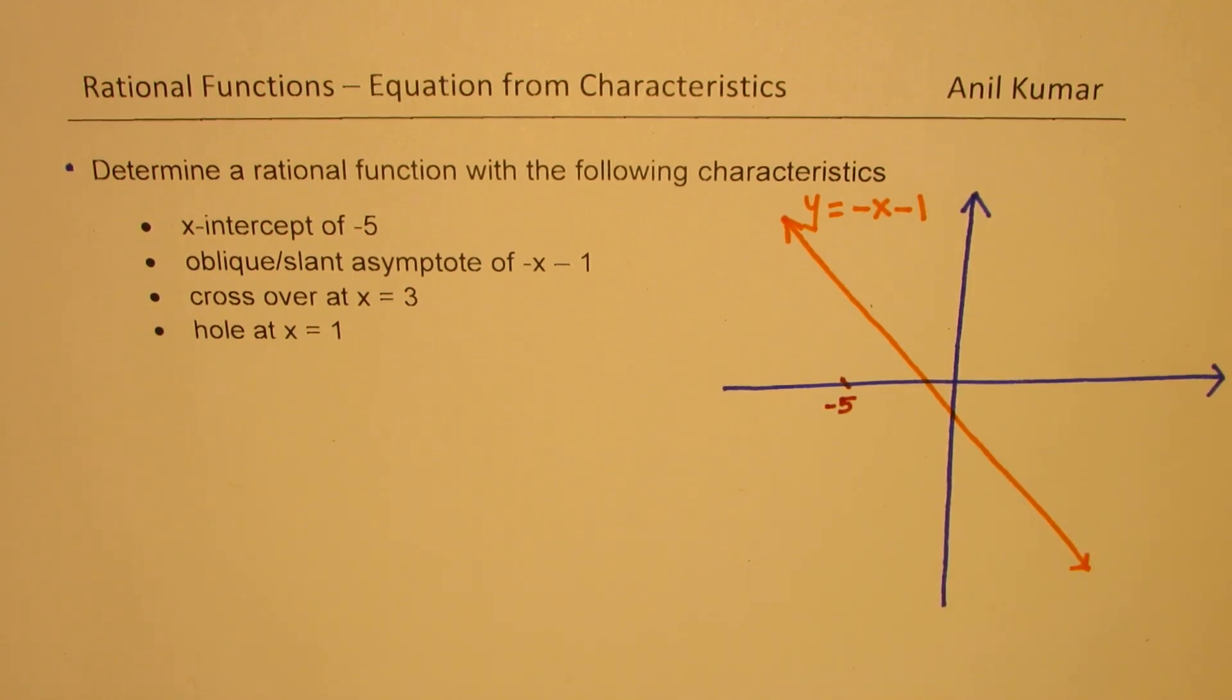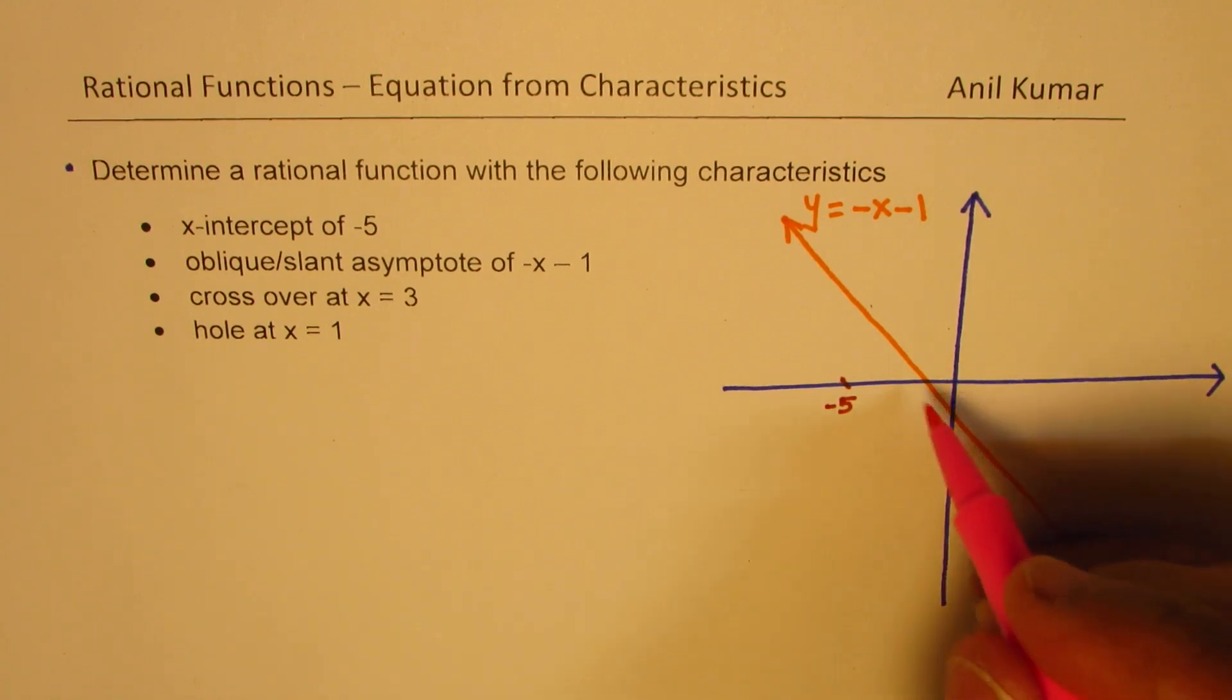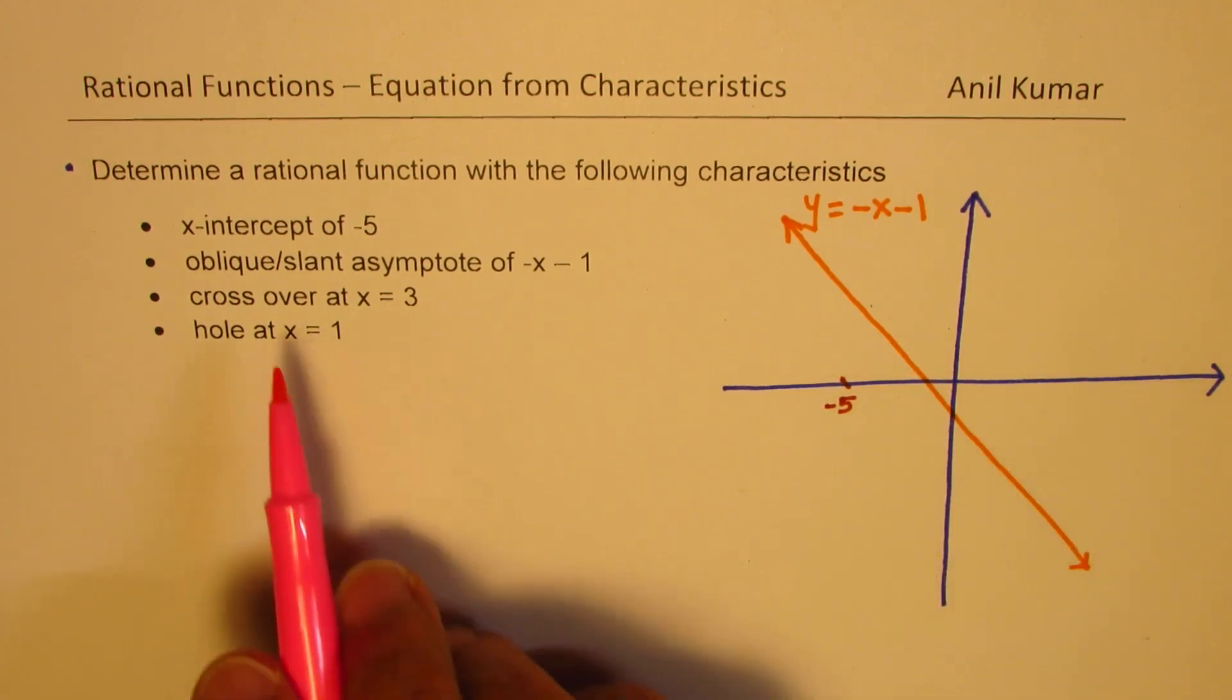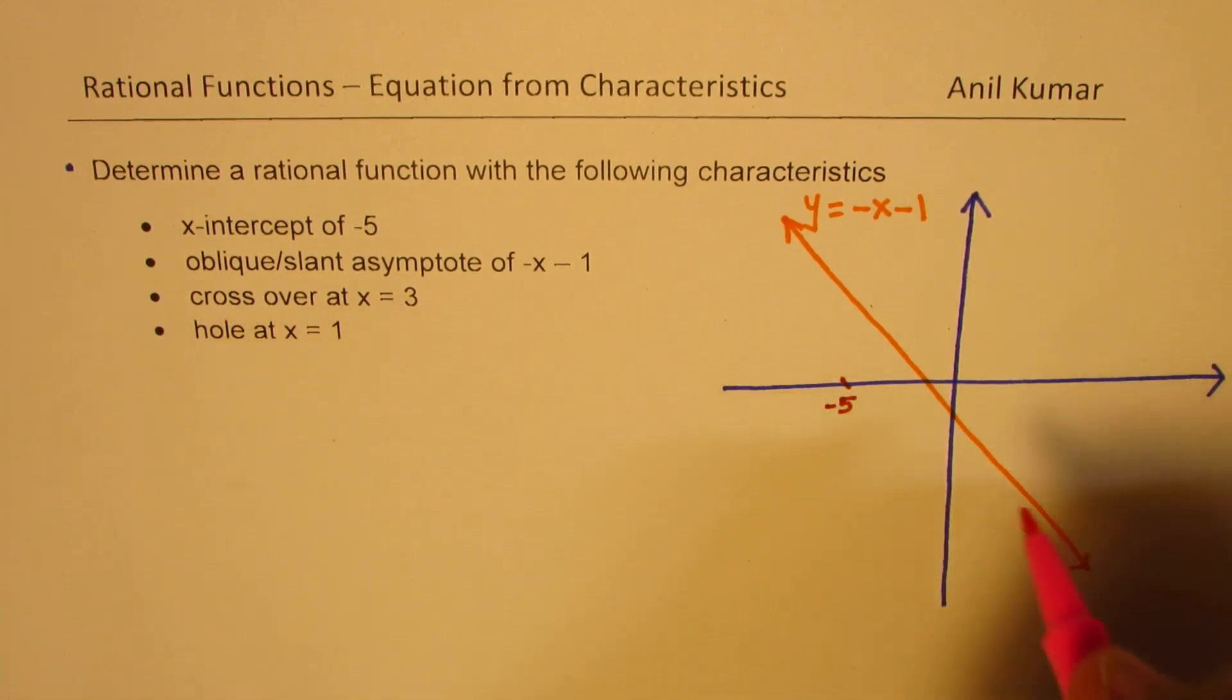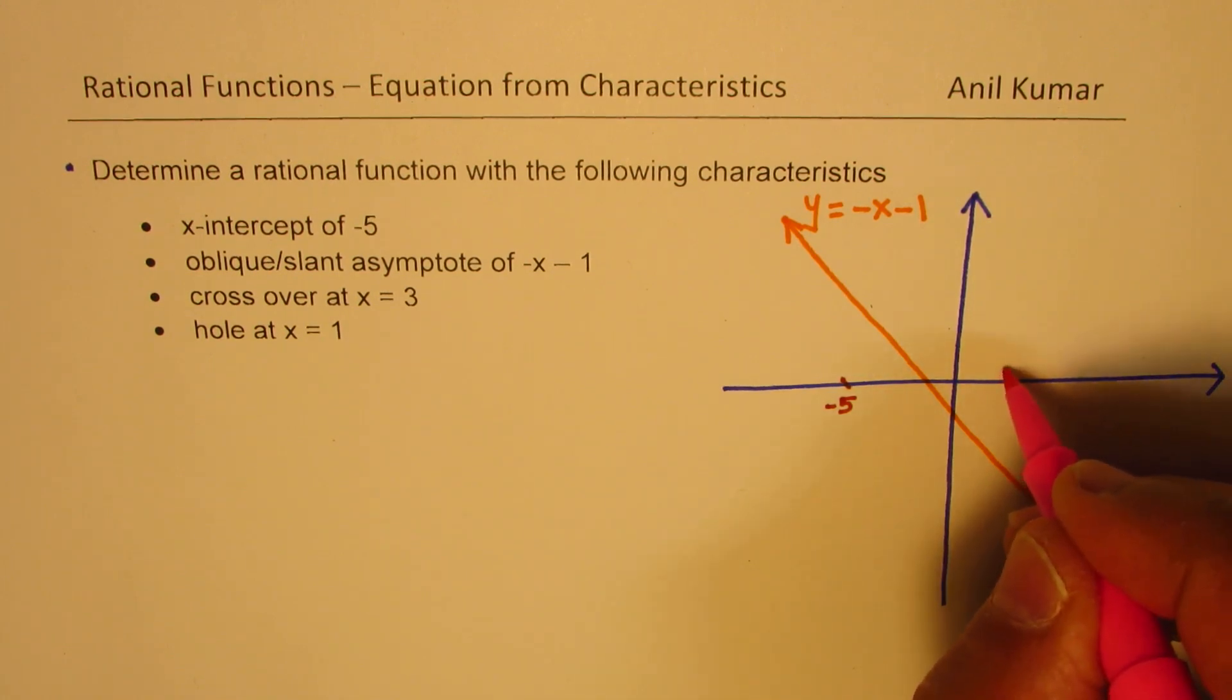Then we are also given that the graph crosses this particular line at x equals 3. So if x is 3, let us say this is x equals 3, that means the graph crosses this point.